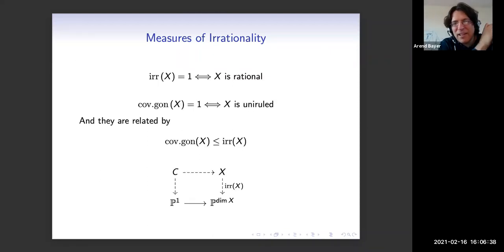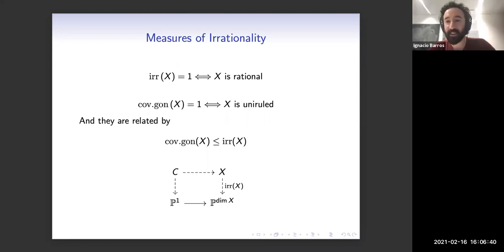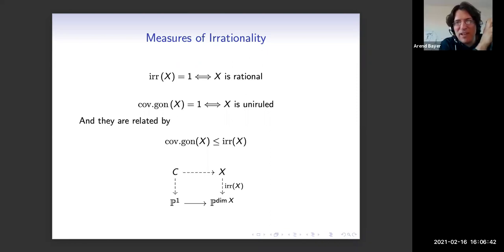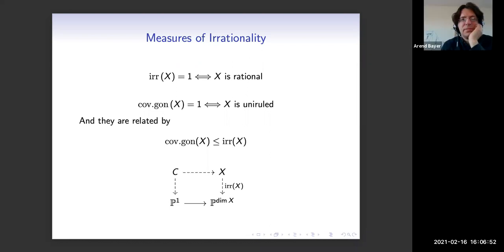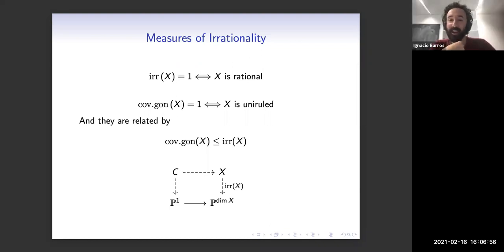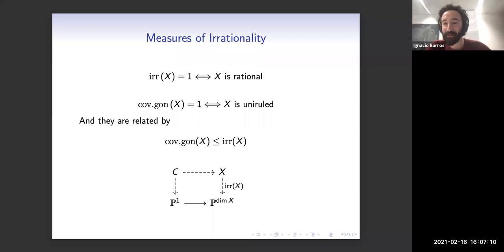One could try to make a mix of the two and ask for the minimal degree of a map to a uniruled variety. That certainly makes sense, though I don't have much to add there.